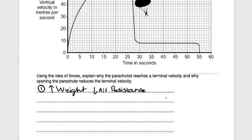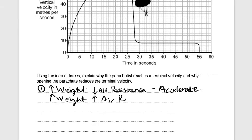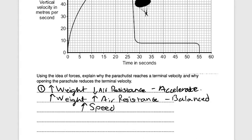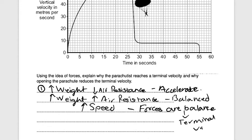Because weight is greater than air resistance, the skydiver will accelerate. As the skydiver accelerates, the weight stays the same but the air resistance starts to increase. As air resistance increases and weight stays the same, the speed also increases. When air resistance becomes equal to weight, the forces are balanced — and this is terminal velocity.